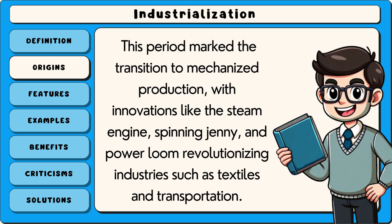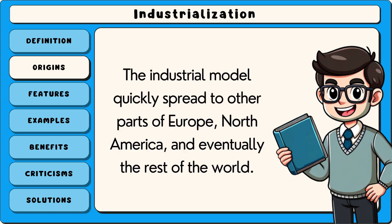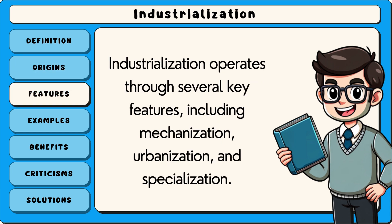This period marked the transition to mechanised production, with innovations like the steam engine, spinning jenny and power loom revolutionising industries such as textiles and transportation. The industrial model quickly spread to other parts of Europe, North America and eventually the rest of the world.